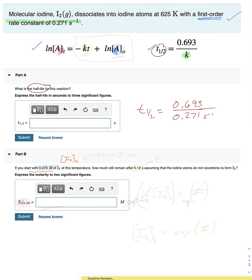You can think of the zero as time equals zero seconds, so before any reaction takes place. And then time is now, we want to know what's happening at 5.12 seconds.